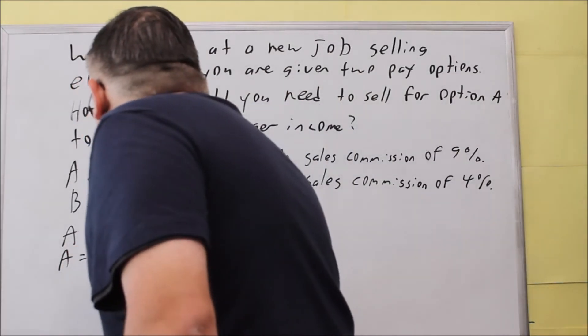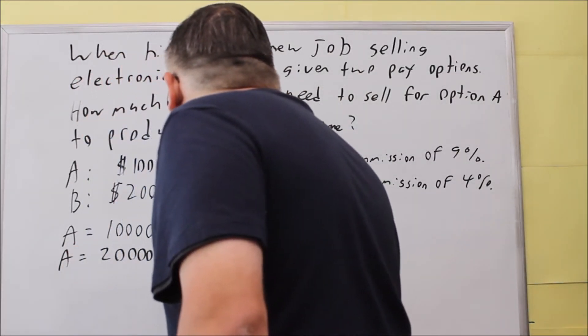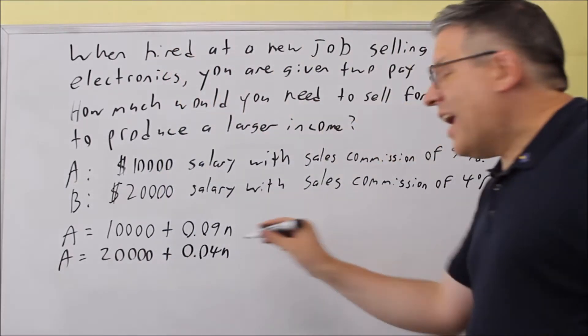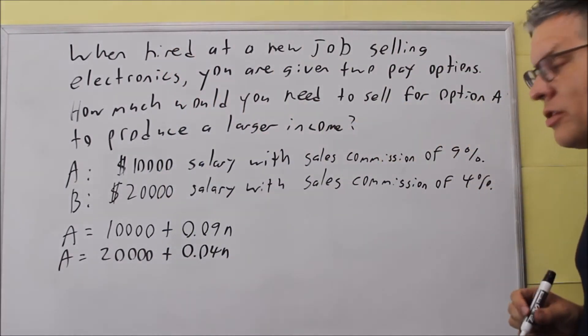Let's do another one with the amount for option B. So A equals 20,000 plus 0.04n, and that would be 4 percent of n.